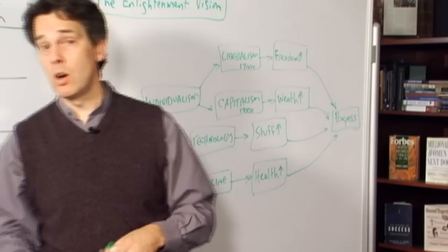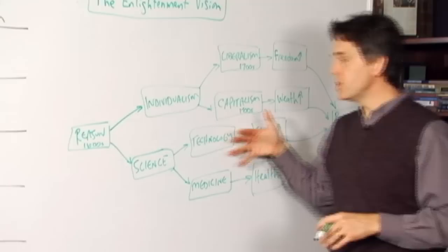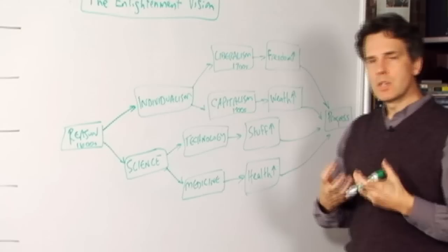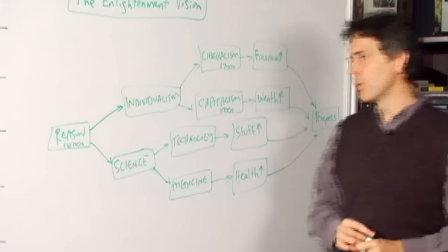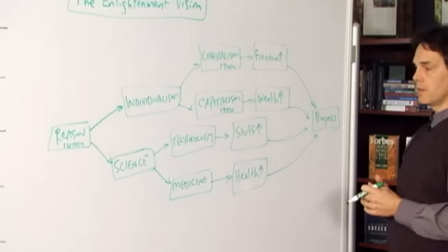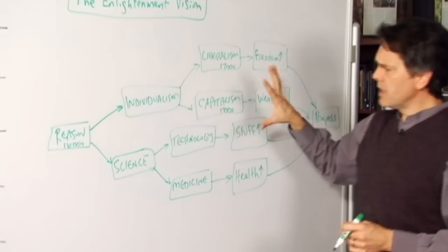There is not a human problem that can't be solved with the application of reason and all of reason's institutions. And so we can think progressively. We can think in terms of the pursuit of happiness being the natural birthright. We can think of freedom, health, and ultimately wisdom as the natural lot of man. Now this is the Enlightenment vision as I'm calling it.